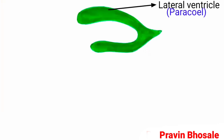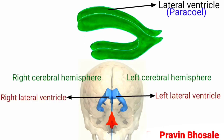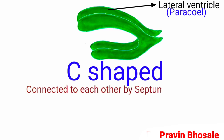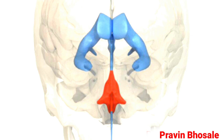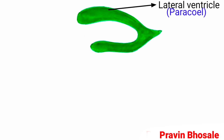The lateral ventricles, also called paracele, are two in number — one in each cerebral hemisphere. They are located below the corpus callosum, are nearly C-shaped, and are connected to each other by the septum lucidum. Here you can see the two lateral ventricles connected to each other by the septum lucidum.